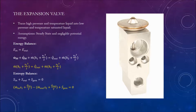The entropy balance on the expansion valve: entropy in plus entropy out plus entropy generated equals zero. The rate of entropy in plus the rate of heat in divided by temperature minus the rate of entropy out plus the rate of heat out divided by temperature plus the rate of entropy generated equals zero.